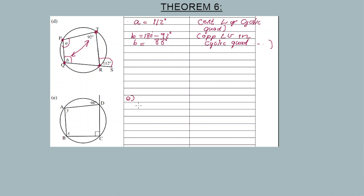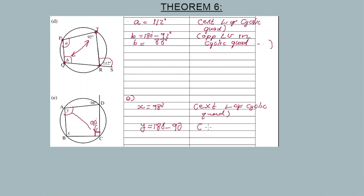For the last example: x equals 98 degrees — external angle of a cyclic quad. For y: since there's a right angle symbol, y equals 90 degrees. Then using theorem five, opposite angles in a cyclic quad: y equals 180 minus 90 equals 90 degrees. Confirmed by theorem number five.